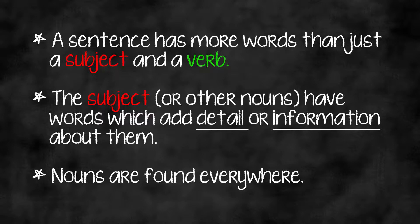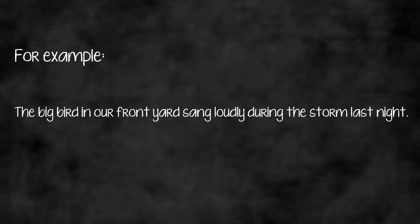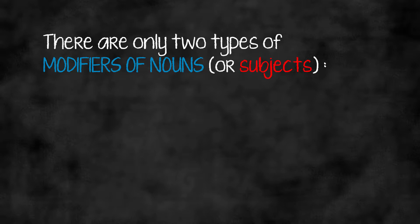For example, this long sentence: 'The big bird in our front yard was singing loudly during the storm last night.' I've chunked the words to indicate that sometimes we have a number of words working together in a phrase. The only action in this entire sentence is 'singing.' Who or what is singing? In this case, 'bird' is the subject — it is a noun. We also have nouns all over the sentence: yard, storm, night — all nouns. There are two types of modifiers of nouns.